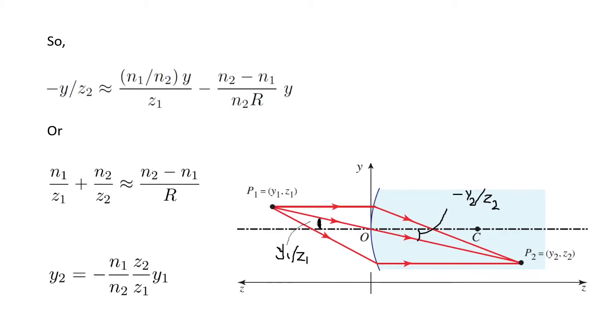Also, I can obtain this relation between y2 and y1. So here, for example, I displace point P1 and P2 off the axis. They are not located on the axis. So here, for example, P1 is located at y1 and z1, and P2 is located at y2 and z2.